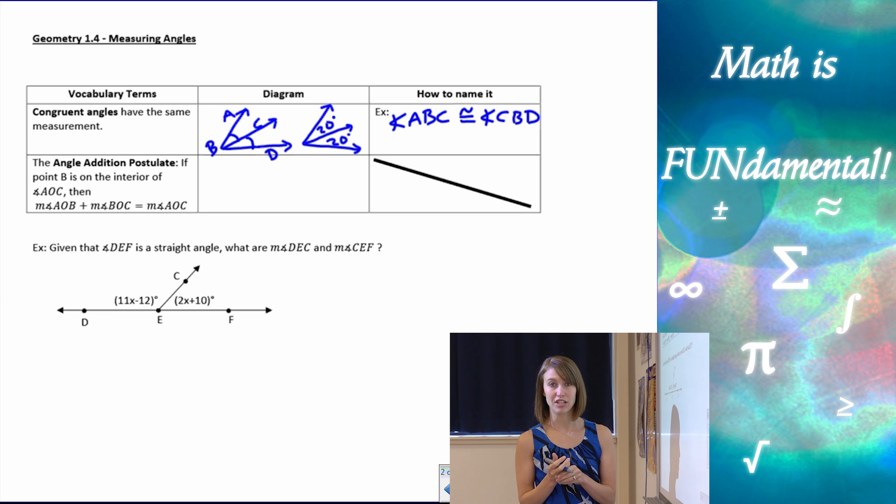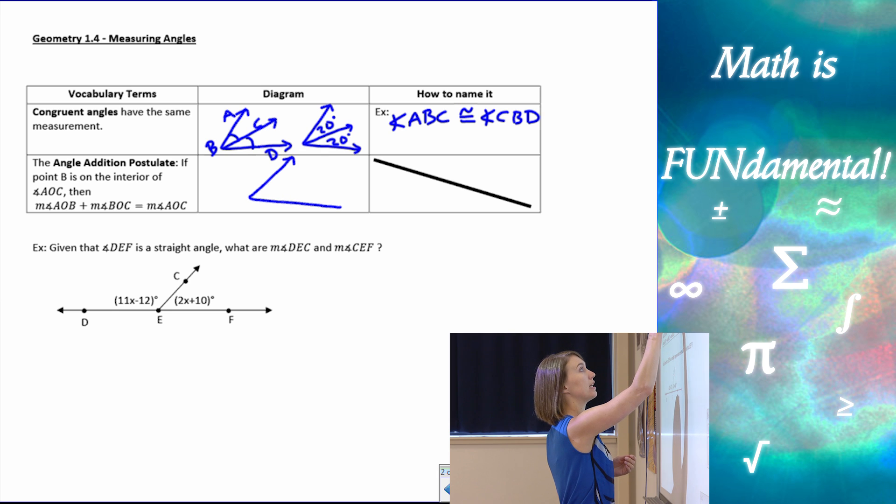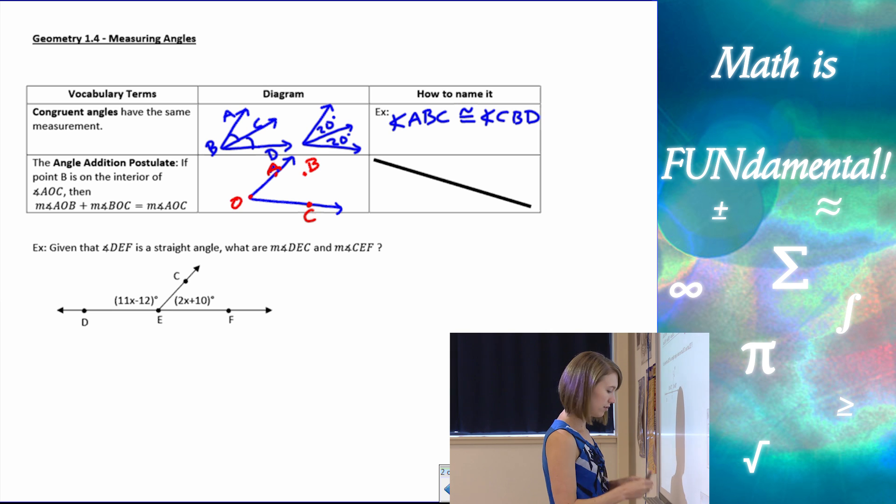Last one, we have angle addition postulate. It's very similar to the segment addition postulate, which we learned a couple lessons ago, but this one deals with angles. So in our angle addition postulate, if I have an angle AOC. So let's draw an angle A, O, C. Let me put some points here. So A, O, and C. And then let's put a point B inside our angle on the interior of our angle. If we draw a ray connecting O, the vertex, and going through B, we end up with two angles here.